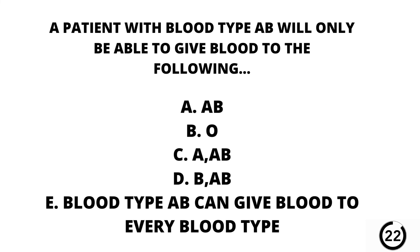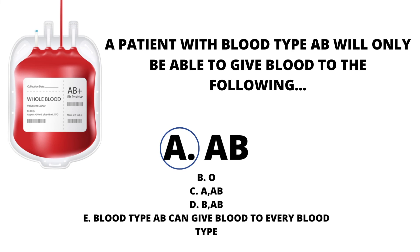Question number 28. A patient with blood type AB will only be able to give blood to the following: AB, O, A, and AB. B and A. Or blood type AB can give blood to every blood type. Our answer here is A. Blood type AB — so a patient with blood type AB will only be able to give to blood type AB.